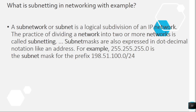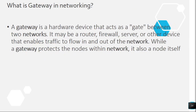Question 12: What is subnetting in networking, with example? A subnetwork or subnet is a logical subdivision of an IP network. The practice of dividing a network into two or more networks is called subnetting. Subnet masks are also expressed in decimal notation like an address — for example, 255.255.255.0 is the subnet mask for the prefix 198.51.100.0/24.